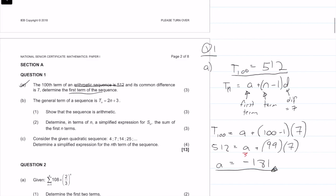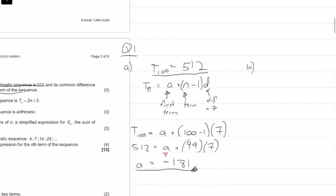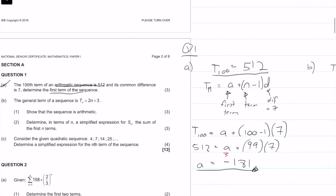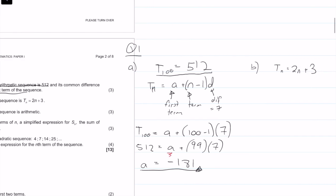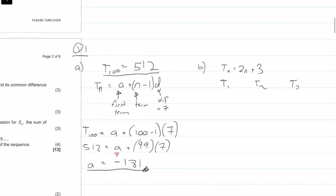So we'll do B next. The general term of a sequence is TN equals 2N plus 3. Then it says, show that the sequence is arithmetic. So we want to show that the sequence is arithmetic. The easiest way to do this is just find T1, T2, T3. We can probably get away with just doing 3.